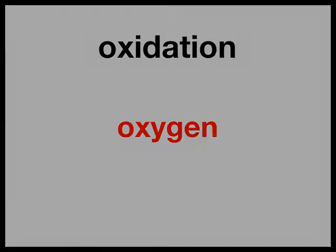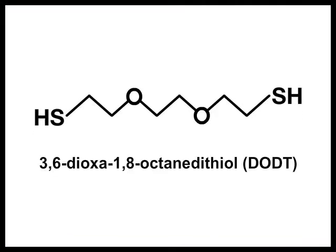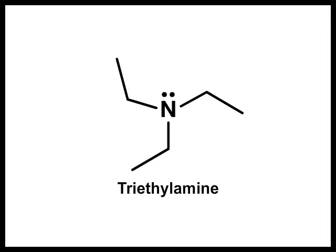Now let's take a look at the chemicals. In this reaction, our monomer is 3,6-dioxa-1,8-octane-dithiol. Our second ingredient is triethylamine. Triethylamine is a catalyst that makes the reaction go faster.